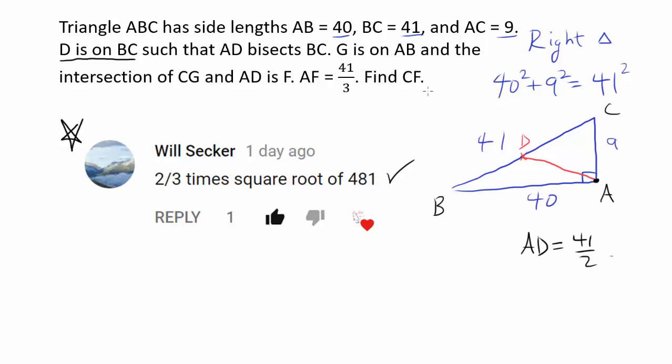And we have G is on AB and the intersection of CG and AD is F. So we have point G on AB. Let me actually bring it closer to this side as we are about to find out. And the intersection of CG and AD is F.